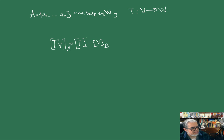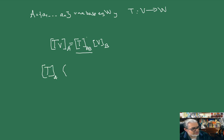¿Cómo podemos escribir esto mejor? Que sea una matriz de cambio de base. Es decir, ¿quién es esta matriz? Es la que tiene como columnas la iésima columna, variando i, que corresponde a la imagen de cada vector base. Entonces la iésima columna va variando.